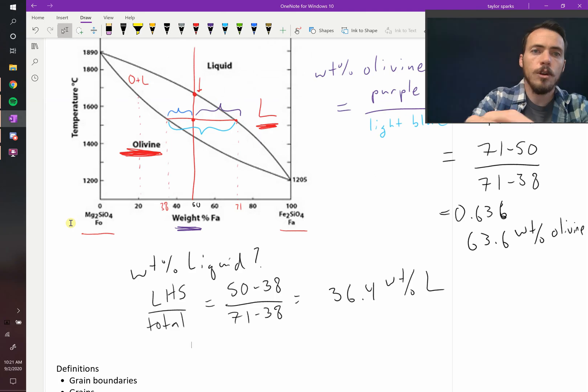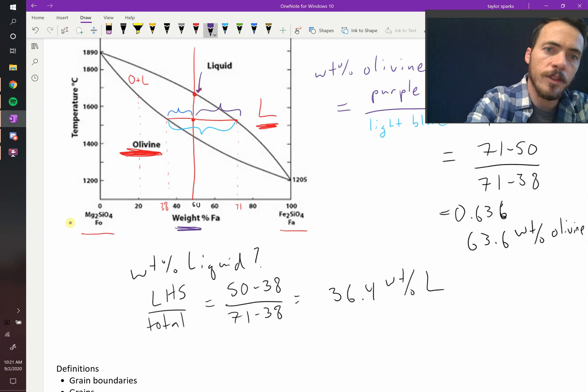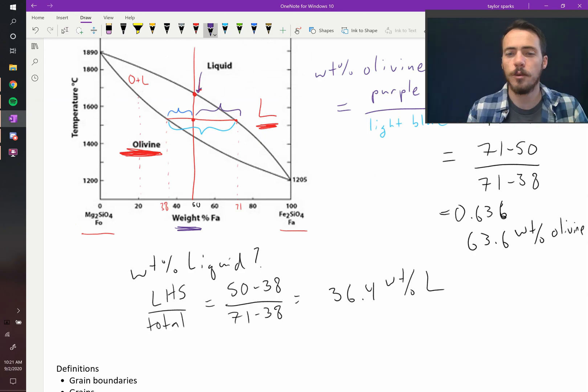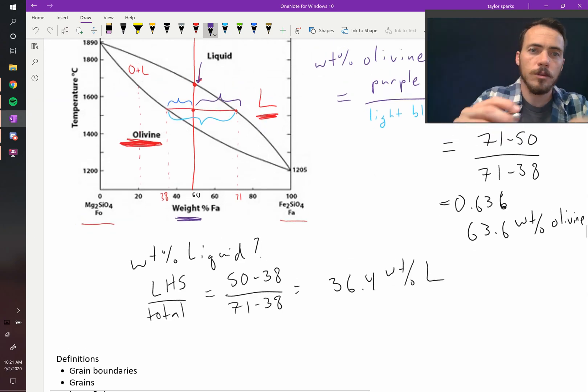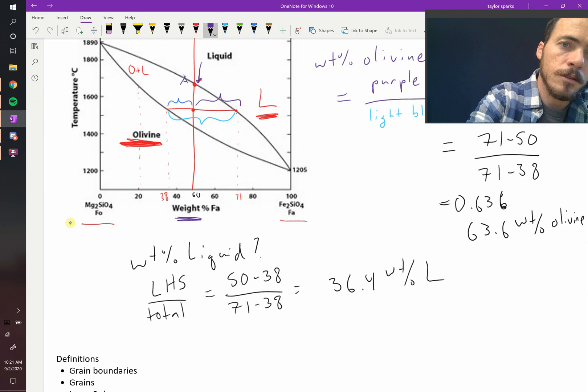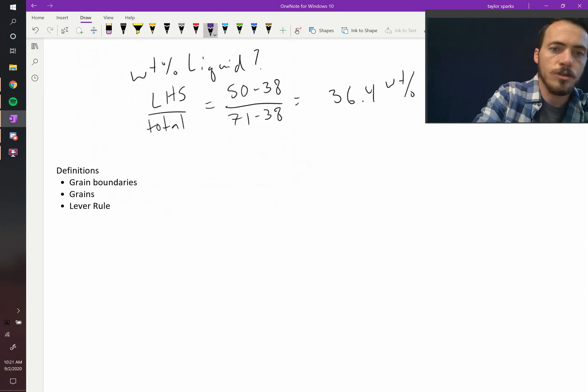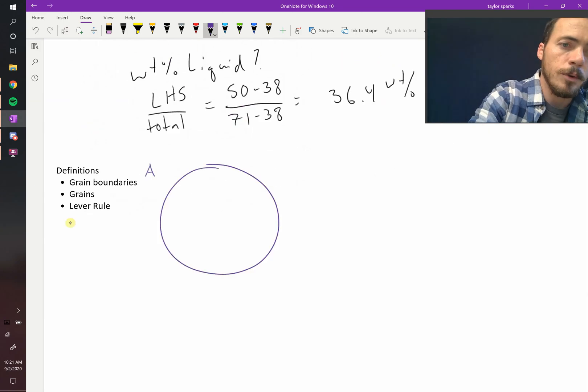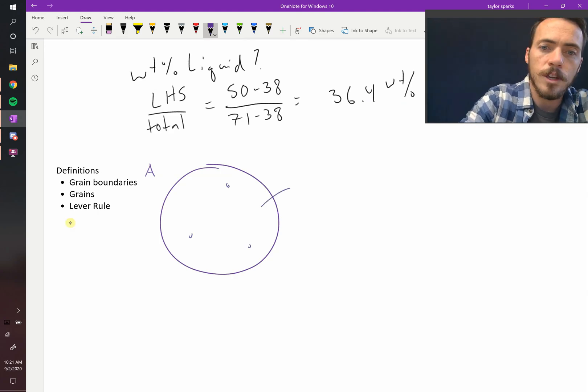So for example, we know that as we cool this thing down to this point right there, the very first solid would form. So we could sketch it. At that point, let's call this point A. We could draw, if we looked in sort of a microscope, we could draw this at point A. And we would see little tiny specks of solid just starting to form.